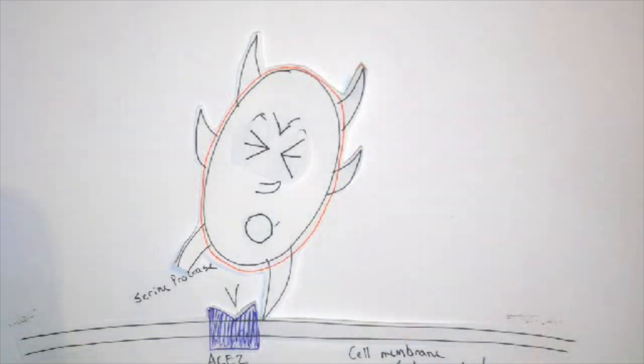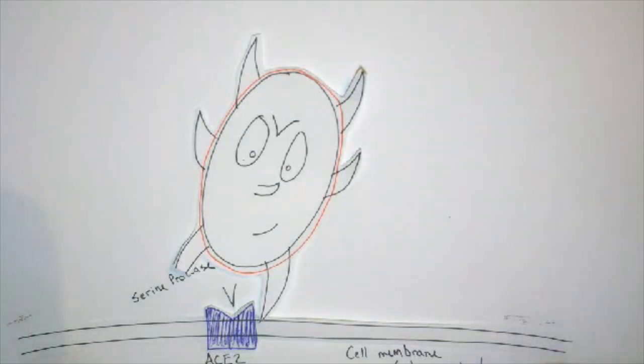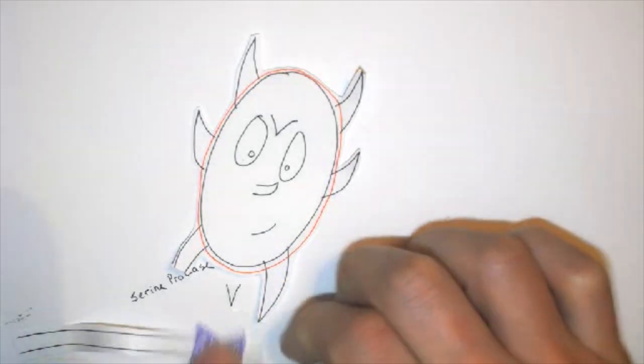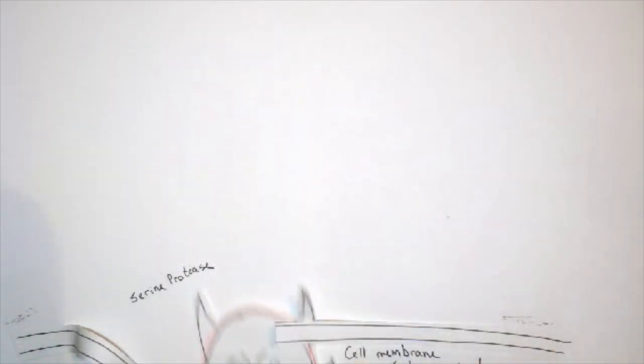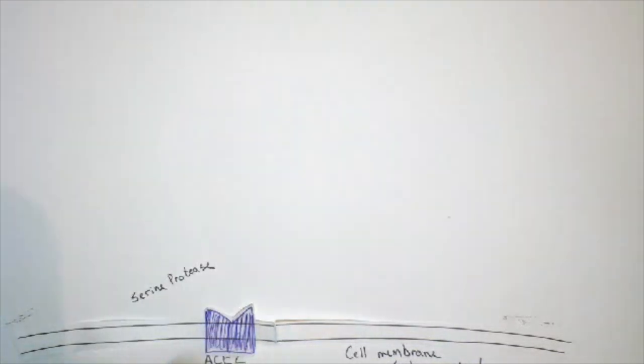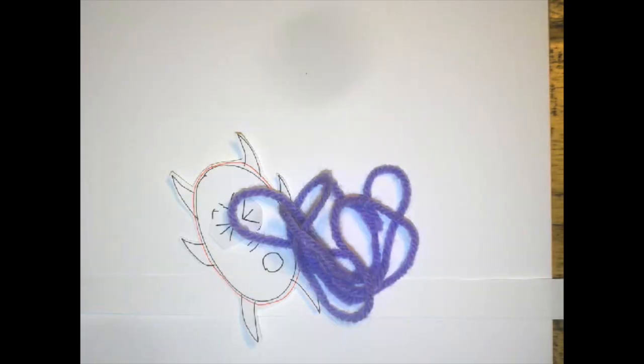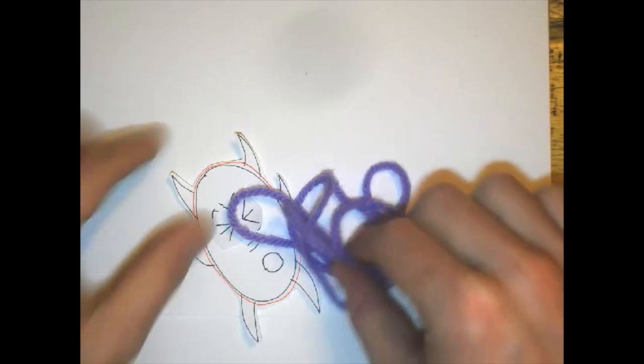Once the spike protein subunit is cleaved off, the remaining sections of the spike protein fuse to the envelope protein and the cell membrane together, allowing the viral nucleocapsid to enter your cell. At this point, it's infiltrated your cell and it's able to unload that payload it's been carrying around, the 30,000 base pair piece of RNA that's been locked up inside the nucleocapsid. The instructions for more viruses.